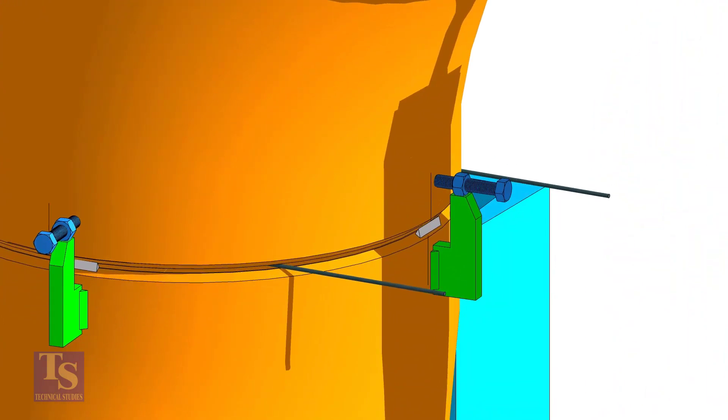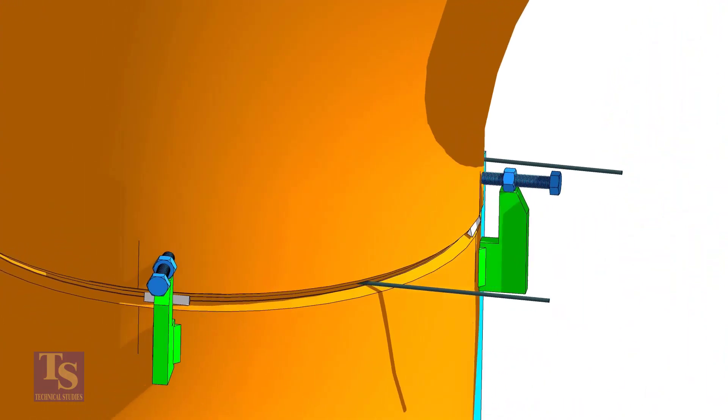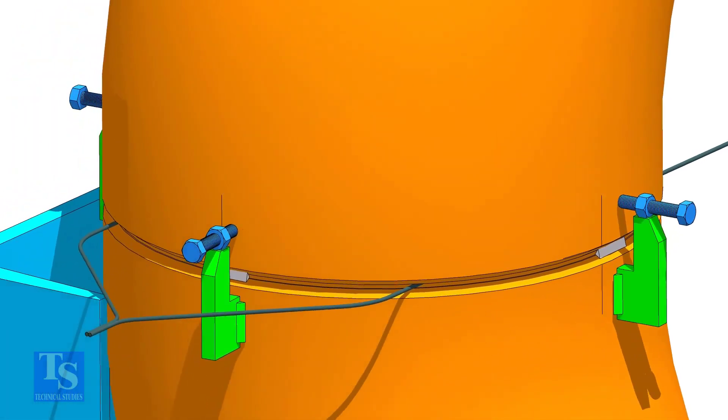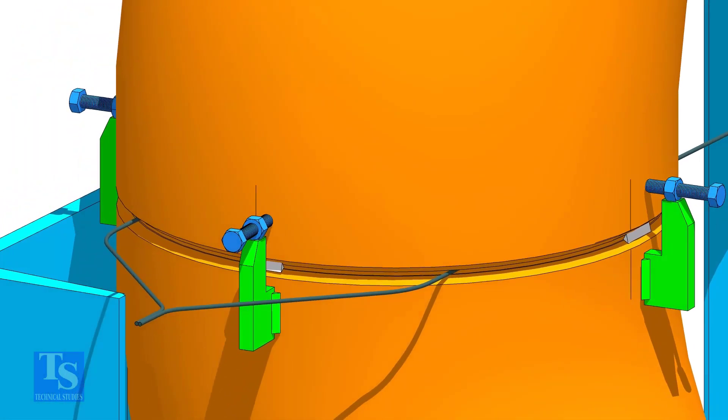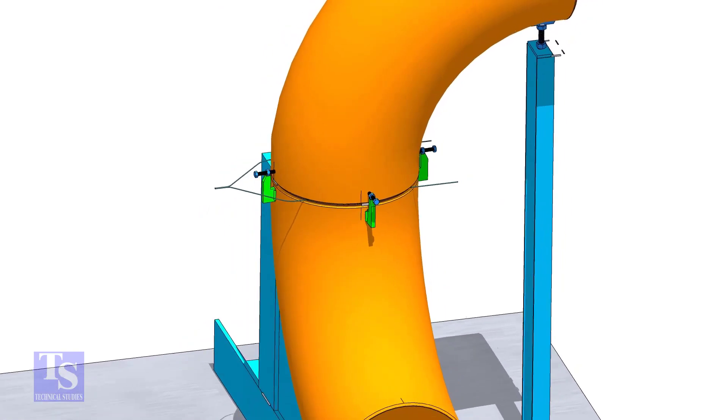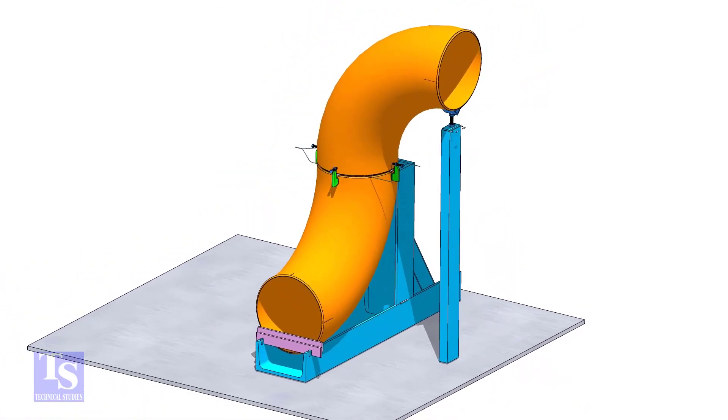Tack weld on this side and the back side of the elbow. Remove the jack bolts and gap rod.